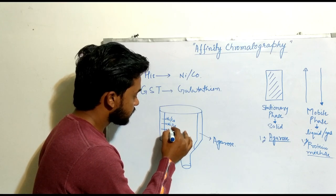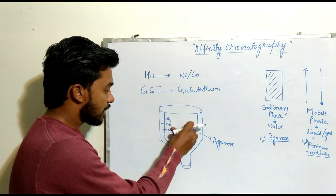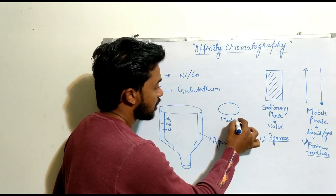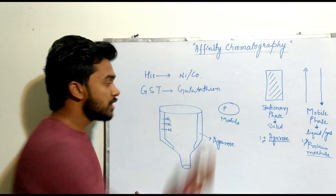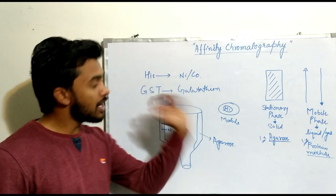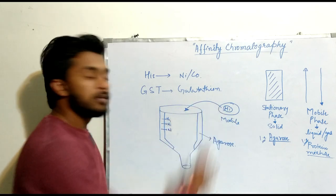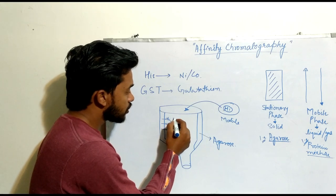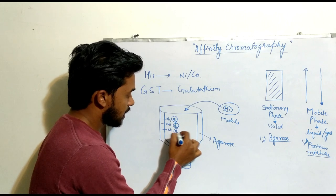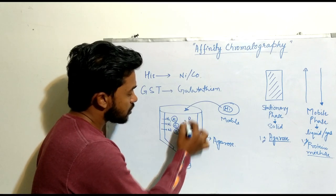The mobile phase is the protein mixture, which contains histidine. When we apply this protein mixture into the column, the histidine molecules show affinity towards nickel or cobalt and bind to them. The rest of the other molecules are simply washed away from the column.